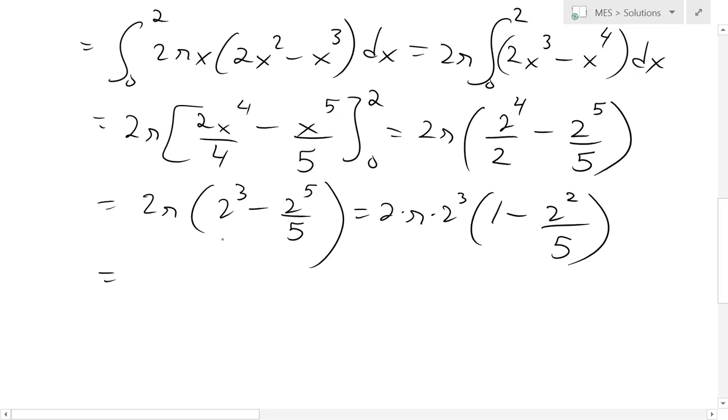And now we just do more algebra. This becomes 2 to the 4 times pi. Now this, just write that as 5 over 5. So we could subtract this common denominator. This is going to be 4 over 5.